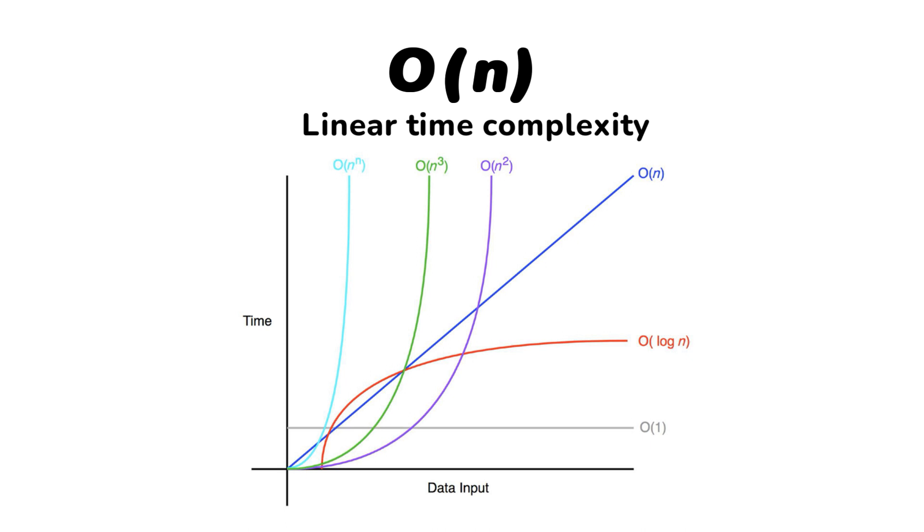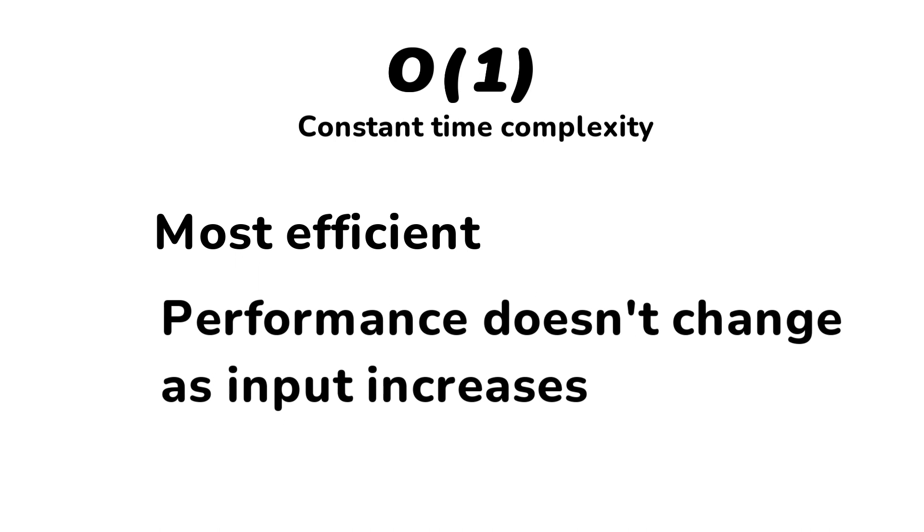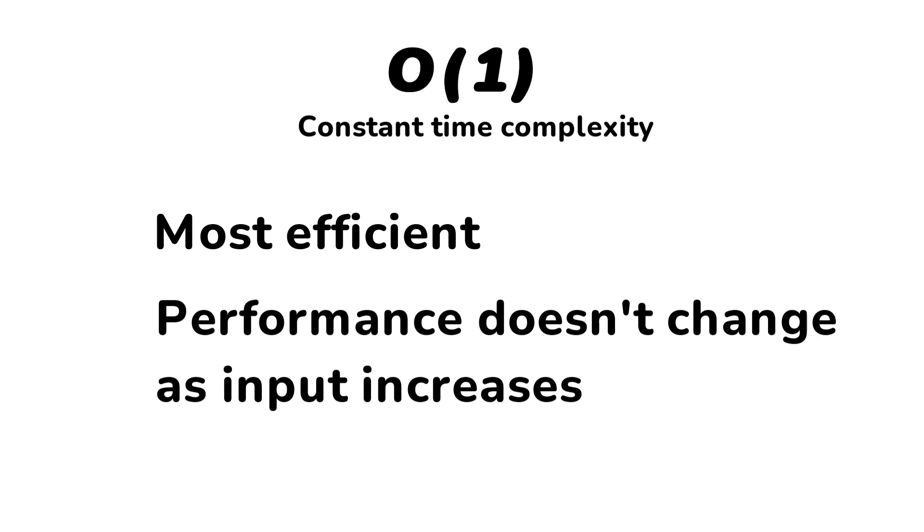In addition to that we also have the constant time complexity which we write as O(1). It's also the most efficient one and it means that the time complexity doesn't change as the size of the input grows. Let's say you want to get the first element in an array or you want to get a value in an array based on the index. In these cases the time complexity will be always constant no matter what.